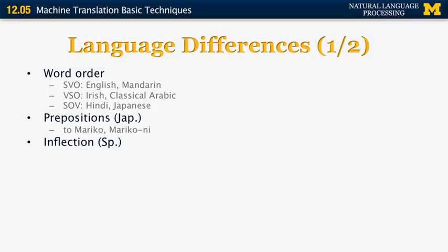Another example is inflection, with an example in Spanish. The English word 'have' can be translated in many different ways depending on the person and number of the verb, and whether it's infinitive or not. 'Tengo' is first-person singular, 'tienes' is second-person singular, 'tenemos' is first-person plural, 'tienen' is third-person plural, and 'tener' is the infinitive — all of these appear in English simply as 'have.' So to translate from English to Spanish, we must identify the subject of 'have' before choosing the correct verb form.